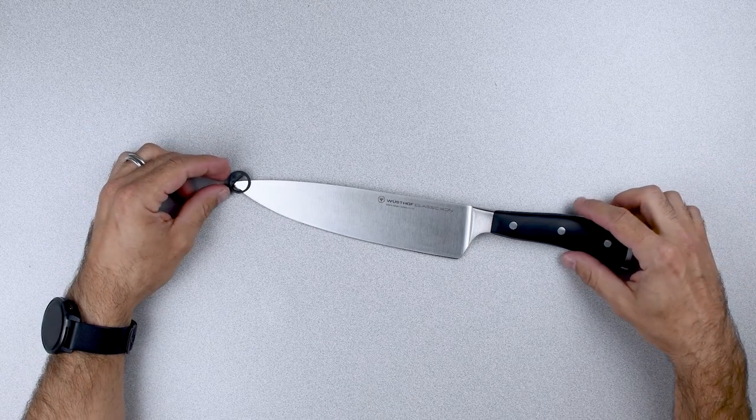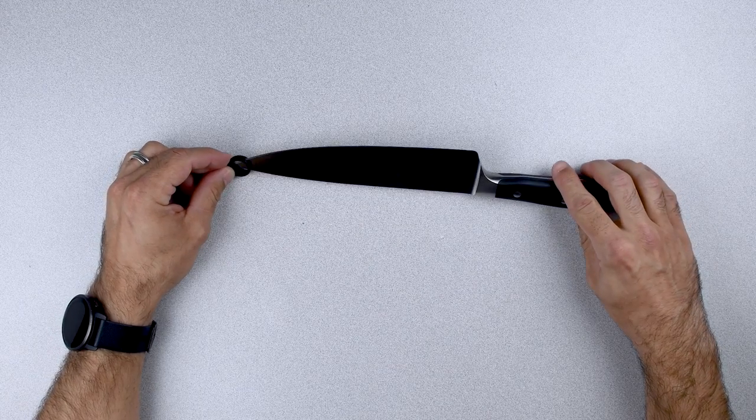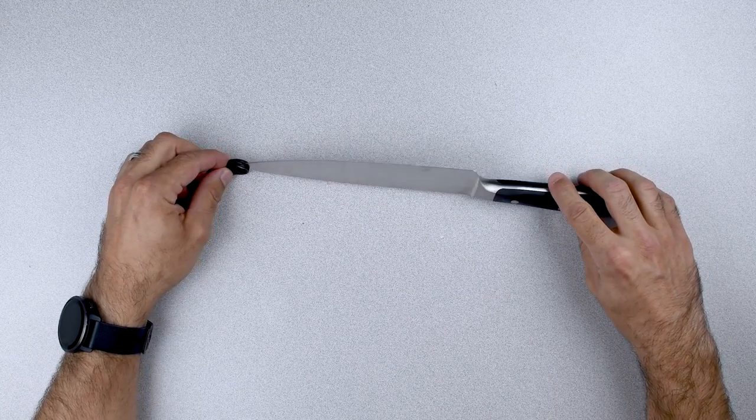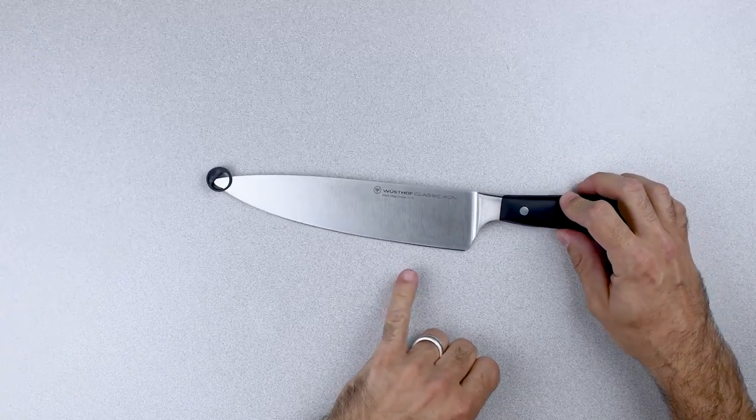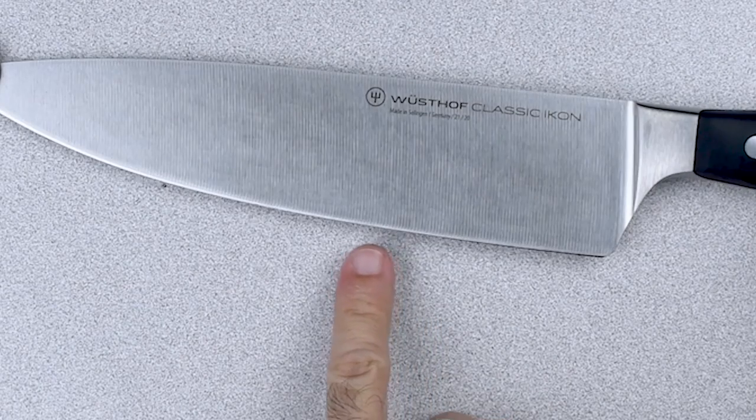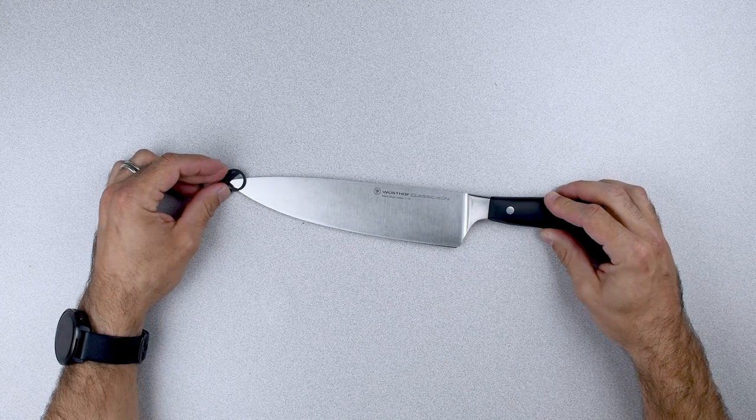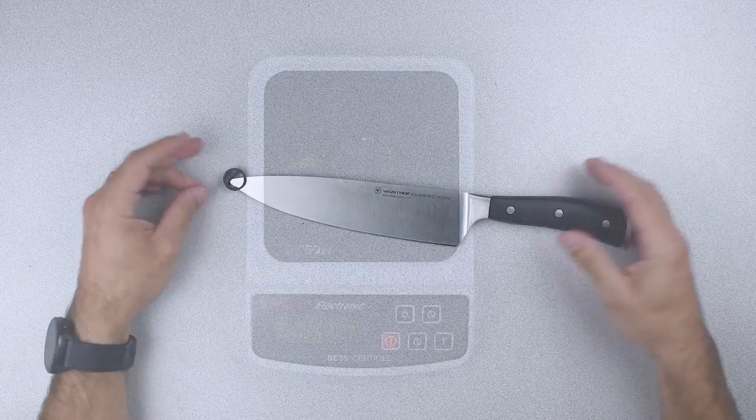John has mentioned that he wants to take this one home and use it, so we'll be getting some good in-use feedback. One thing I would like to comment on before I start testing is that I'm not sure how well this is going to come out on camera, but there are what looks like some dings or a bit of a burr remaining along the edge. That's an interesting thing for a knife like this fresh out of the box. We'll see how that impacts the edge when we test it.